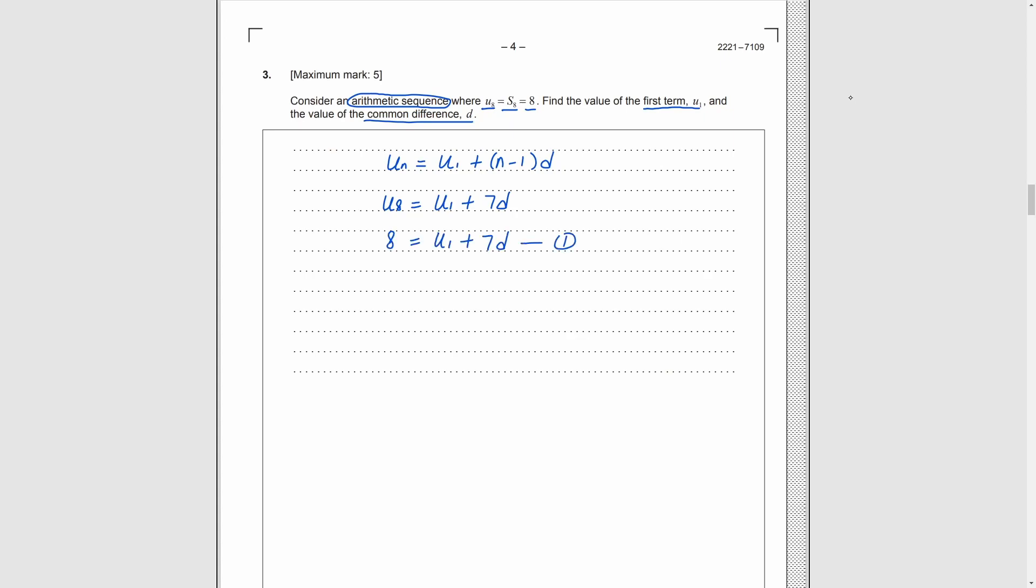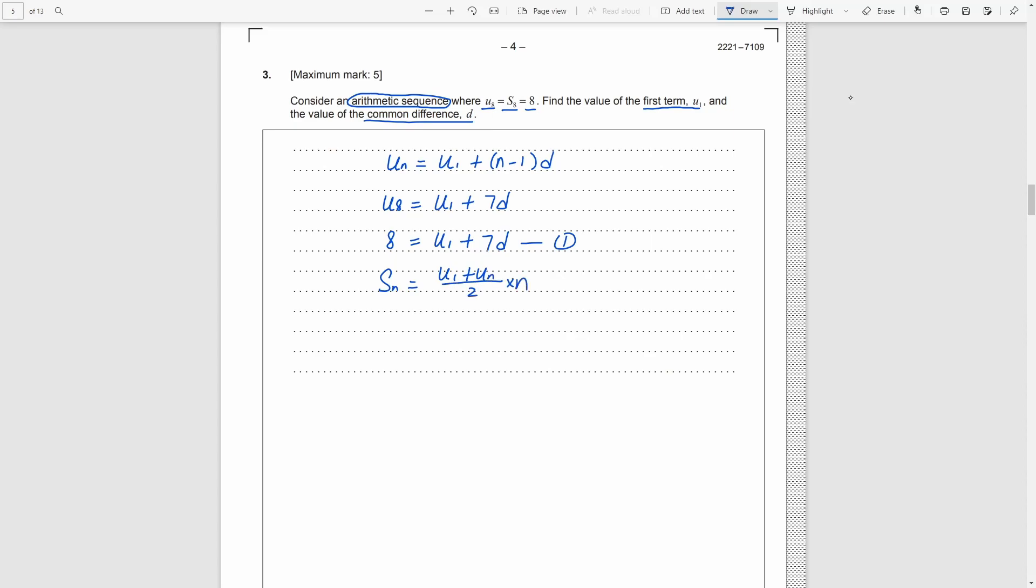And then, by the general formula of arithmetic series, we have S_n equal to u_1 plus u_n divided by 2 times n. Of course, then we do substitution for n and S_n again. After simplification, we can get the second equation.